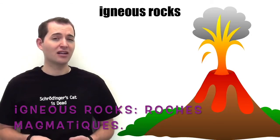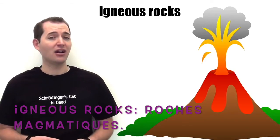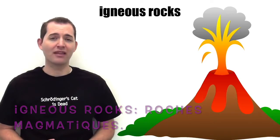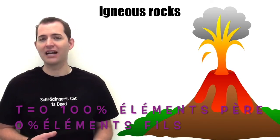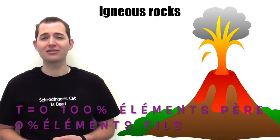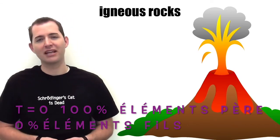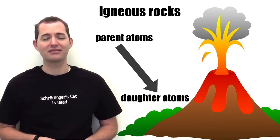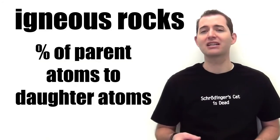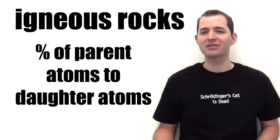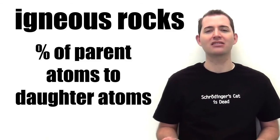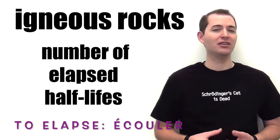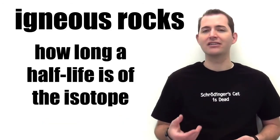When we're talking about radioactive decay, in nearly all situations, we're talking about igneous rocks. This is because when an igneous rock forms from magma or lava, the radioactive clock starts from zero — there are 100% parent atoms and 0% daughter atoms. This makes it a reliable clock for us to monitor the ratio between parent and daughter atoms and use this to determine the age of the rock. Once that igneous rock solidifies, the parent atoms begin to spontaneously decay into daughter atoms, and we use the ratio of parents to daughters to determine how many half-lives have elapsed.